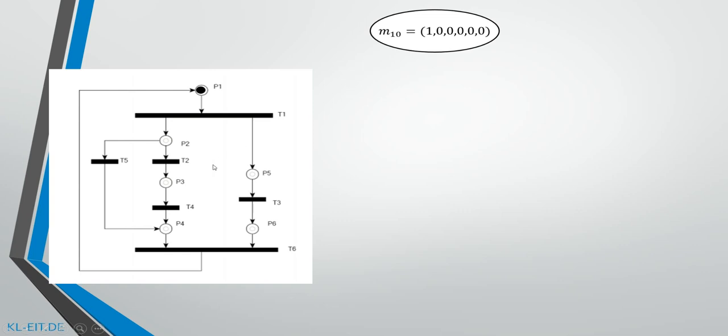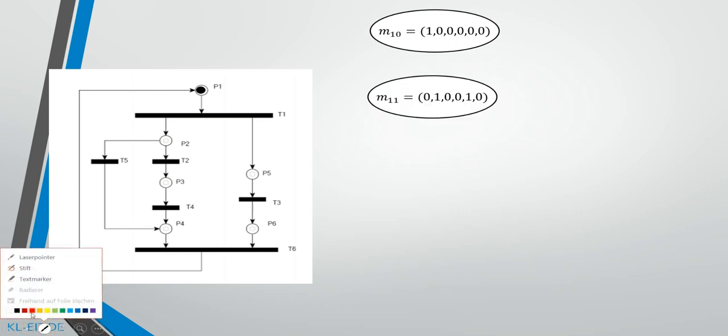Now looking forward to the next possible marking, we will see that from M10 there's only T1 fireable, activatable. By activating T1 we go to the next possible bubble which is now called M11, and in M11 we've got now P2 and P5 marked.